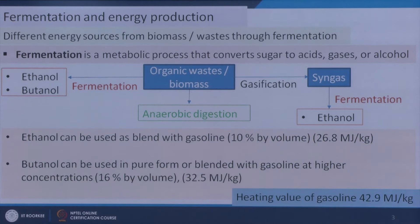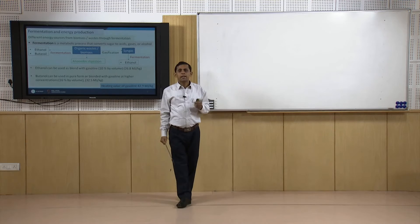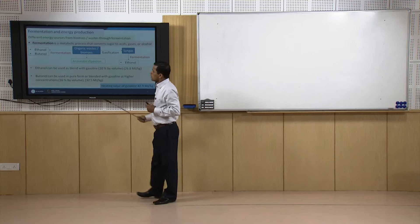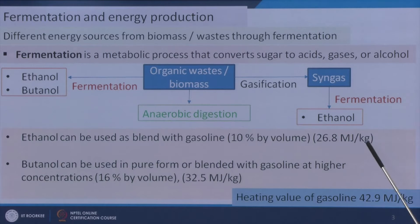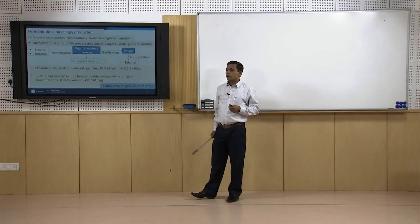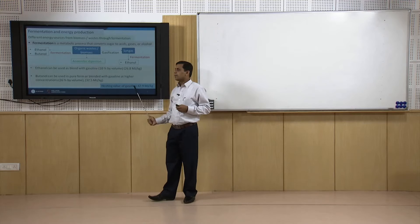Ethanol and butanol produced through these routes can be used in various applications, but as a fuel these compounds can also be used because the heating value of ethanol is 26.8 megajoules per kg, which is a significant amount, and for butanol it is 32.5 megajoules per kg, whereas gasoline is 42.9 megajoules per kg. So these two can be blended with gasoline and used as a fuel.